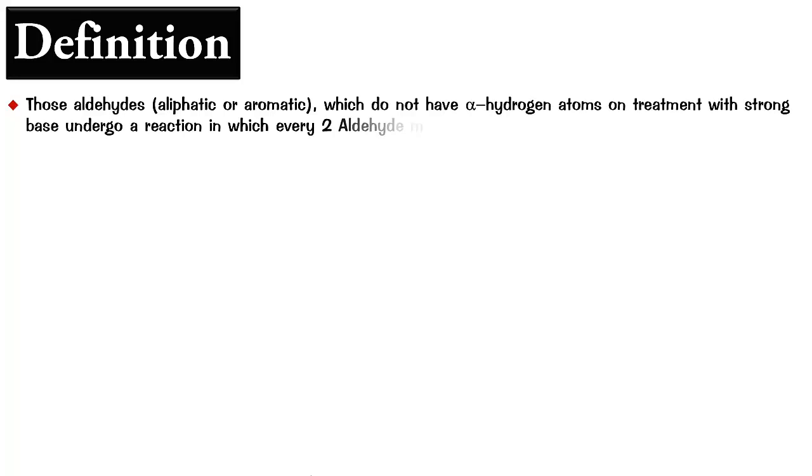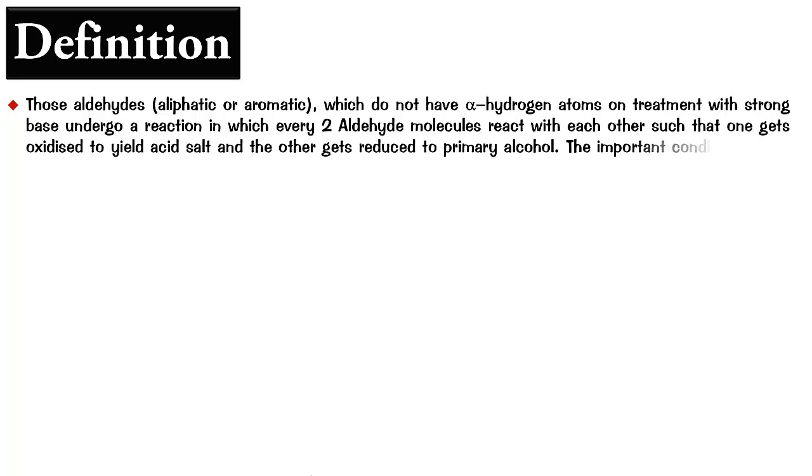Now this reaction occurs in aldehydes, both aliphatic or aromatic, which do not have alpha hydrogen atoms. And they, on reactant with a strong base with high concentration, undergo a reaction in which every two aldehyde molecules react with each other such that one gets oxidized to yield acid salt and the other gets reduced to a primary alcohol. The important condition is that there should not be a good leaving group attached to the carbonyl group.